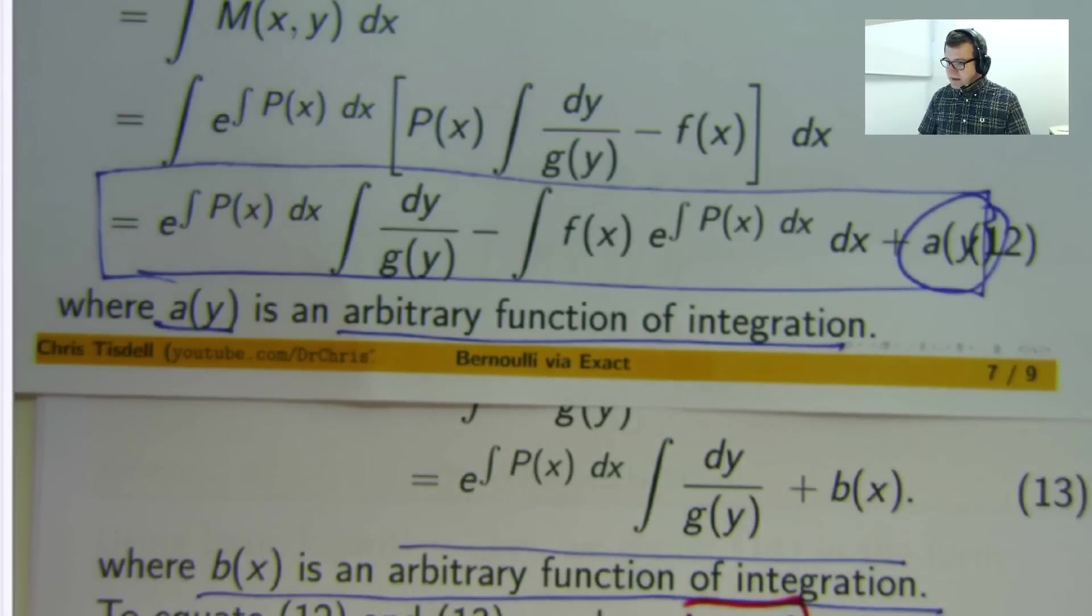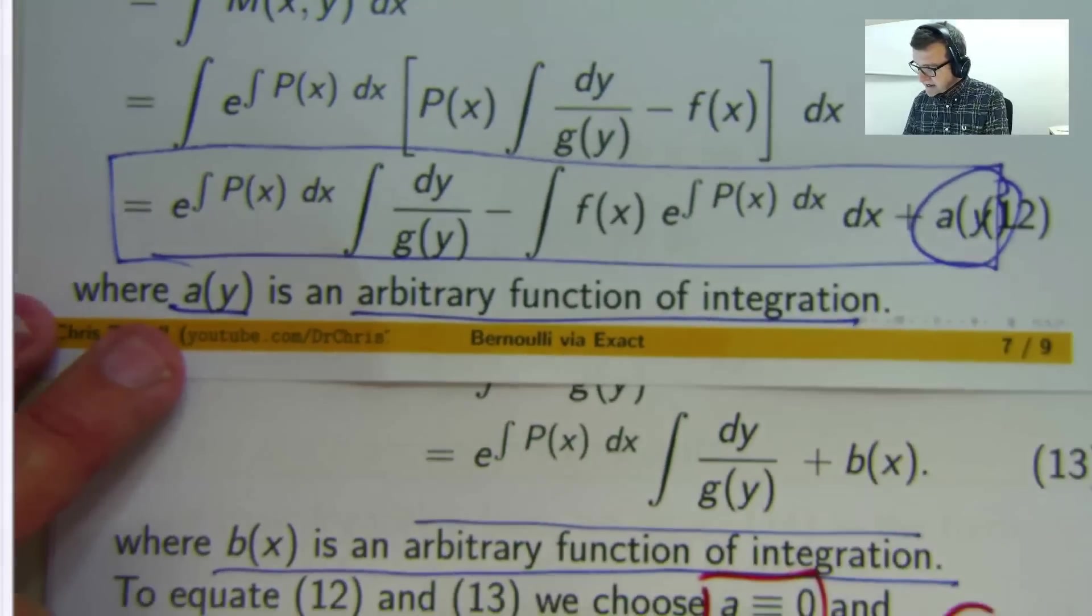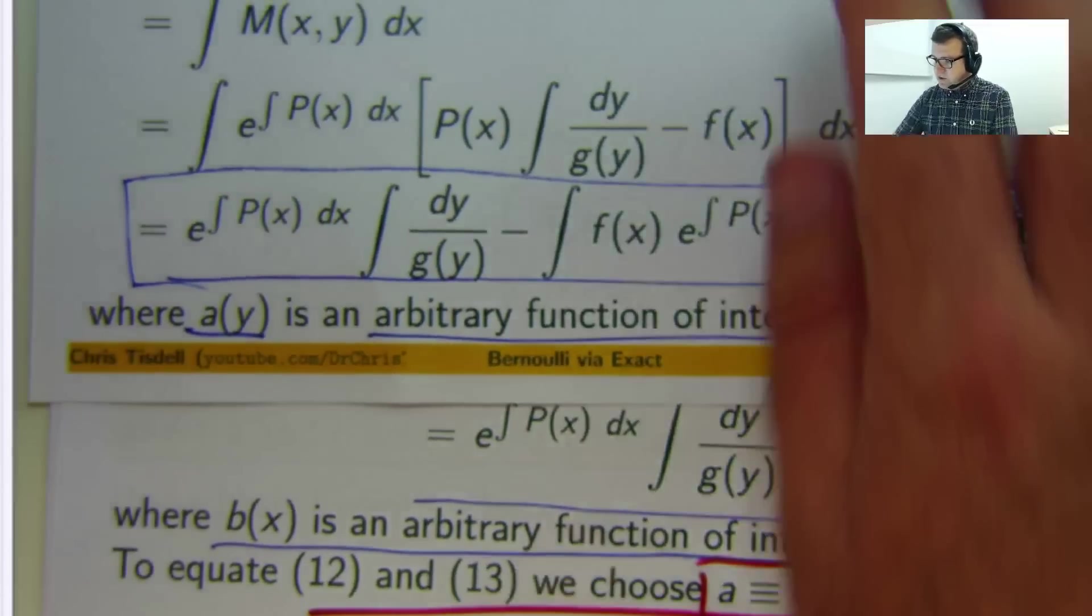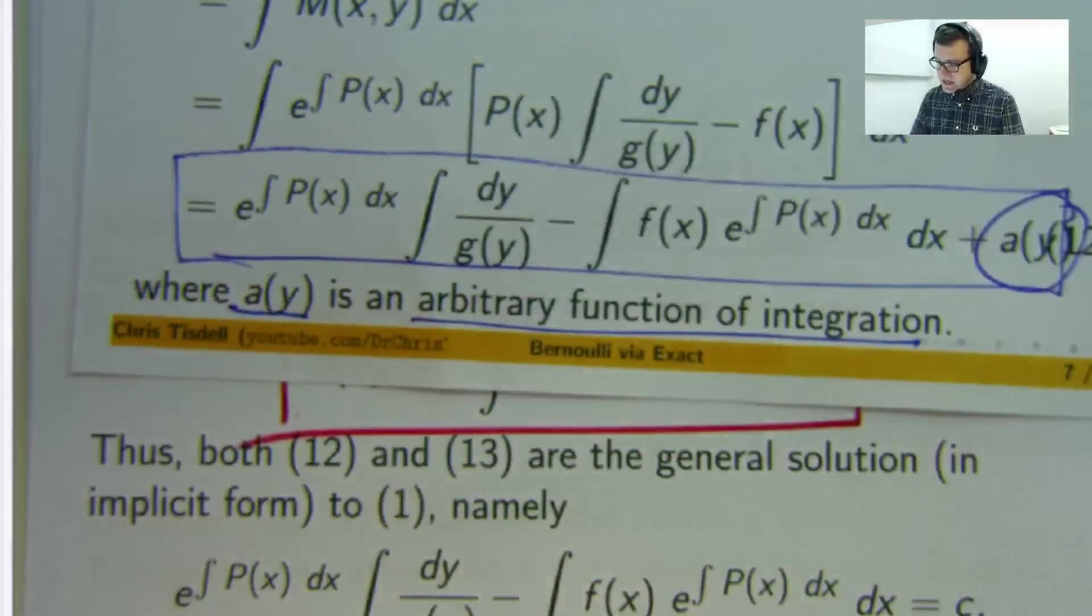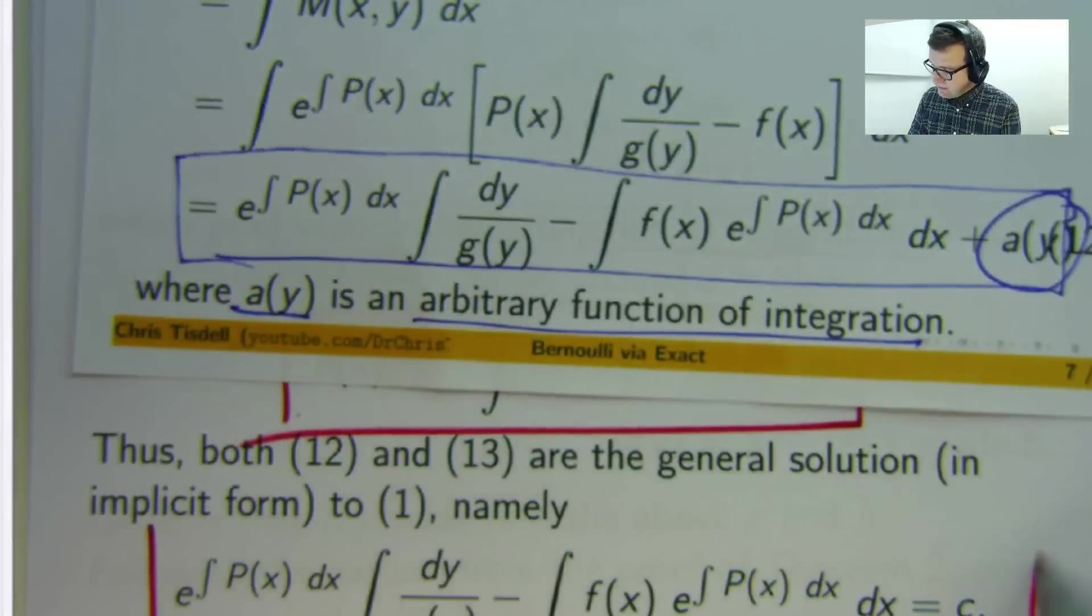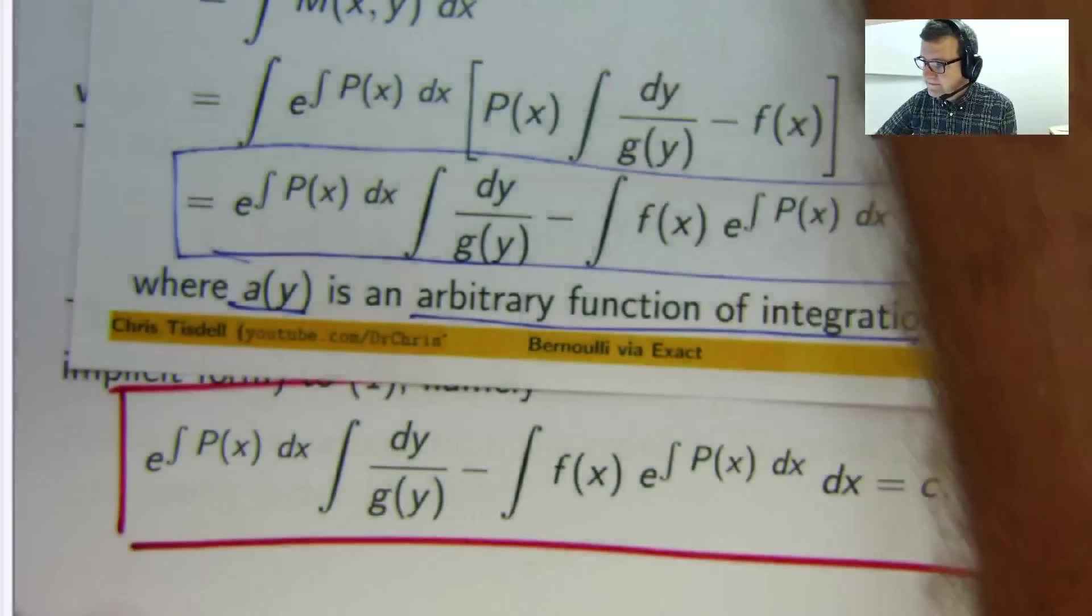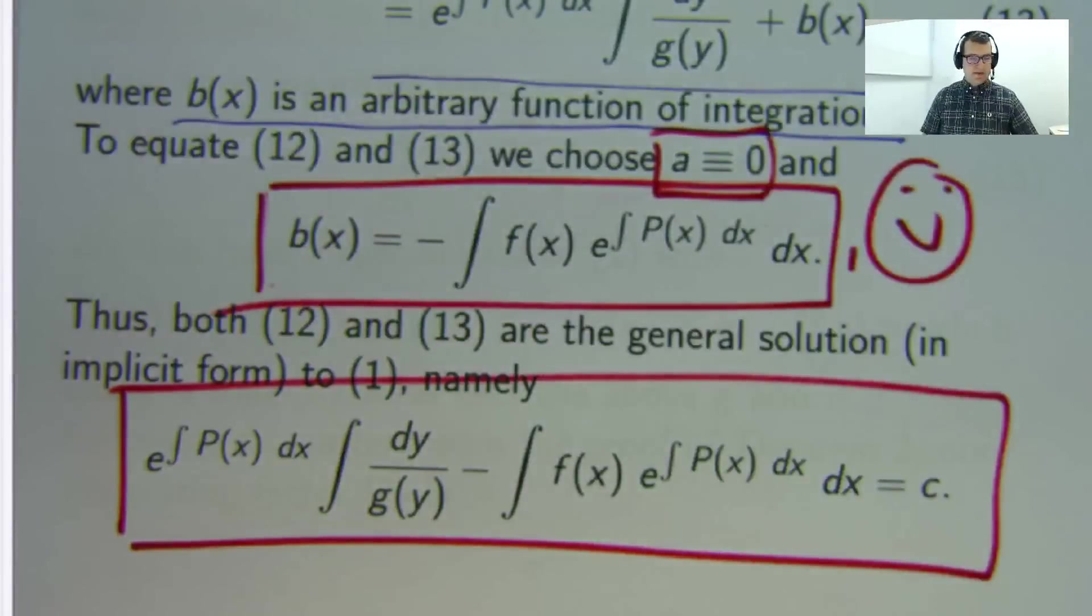So if we rewrite those then so with a of y 0 and b of x equal to this you can combine 12 and 13 to get this implicit solution. Now there's nothing really spectacular about that. You can just do it using first year university methods. Nothing amazingly deep about that but I think a it's fun b it's accessible and you know I just like to play around with it.